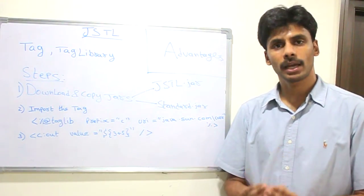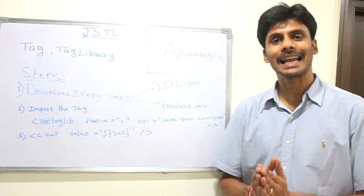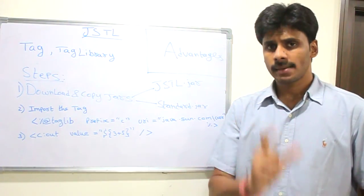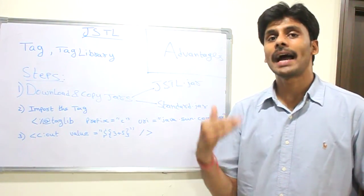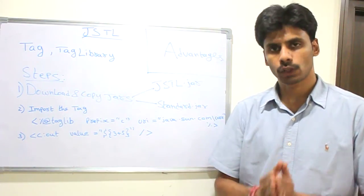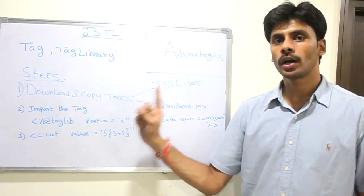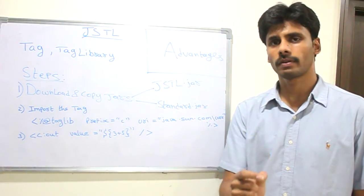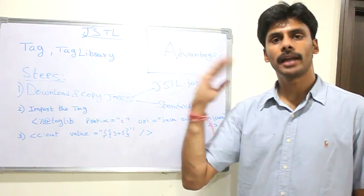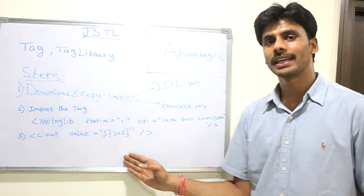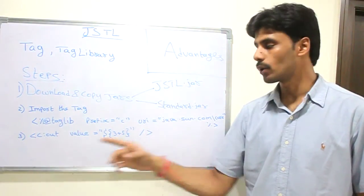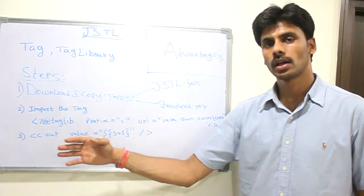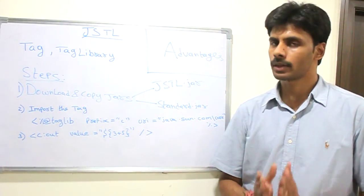To quickly summarize: JSTL is a tag library from Sun Microsystems. A tag library is a collection of tags which does similar tasks. A tag is an XML element which has a Java handler behind it and does a particular task for you. The steps to use JSTL: download and copy two JAR files — jstl.jar and standard.jar — to the WEB-INF/lib folder of your web application. Second, add the taglib directive to your JSP page, then start using the various tags provided. You can find a lot of examples for core tags in JSTL by searching online.